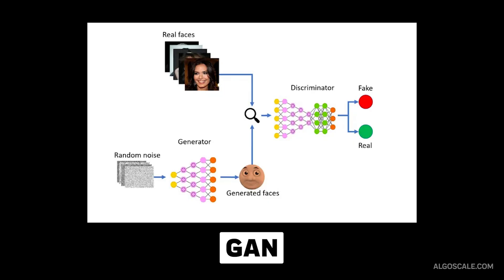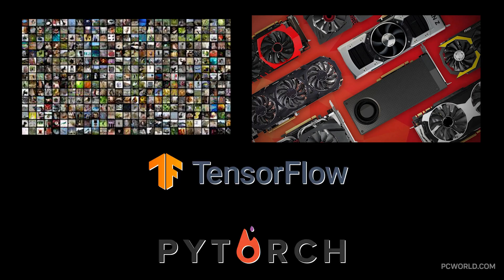Modern deep learning is powered by three things: massive datasets providing examples to learn from, powerful GPUs to crunch the numbers, and frameworks like PyTorch and TensorFlow that handle the complex math.